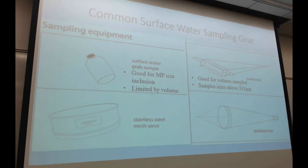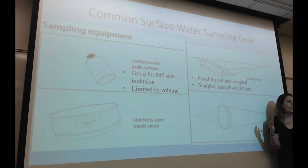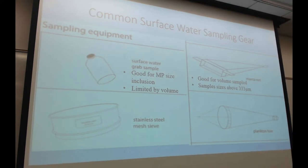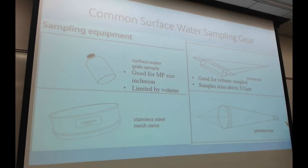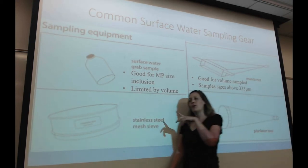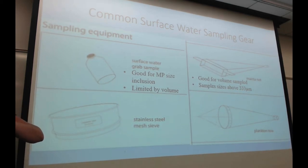Each of these has their own pluses and minuses. Both are time-point specific — it's just one time and you're taking a specific reading. Grab samples are pretty well validated: if you take a grab sample, you're gonna get a wider range of sizes, and oftentimes people taking grab samples are getting much larger particle sizes per volume than they would get with a manta. For grab samples, they're good for size inclusion, so you're making sure you're getting everything that's potentially in the water.